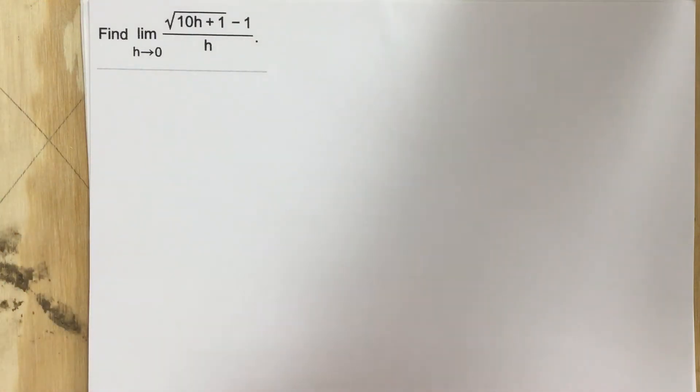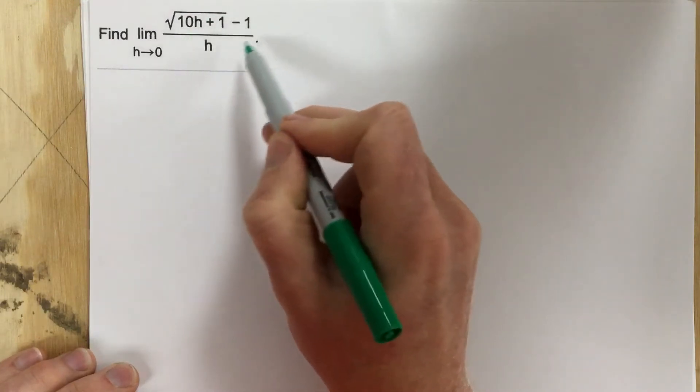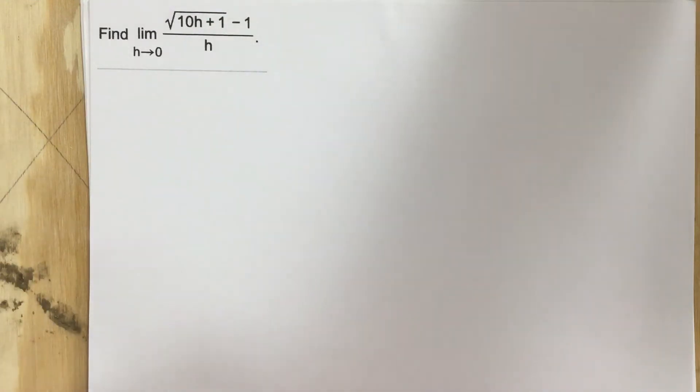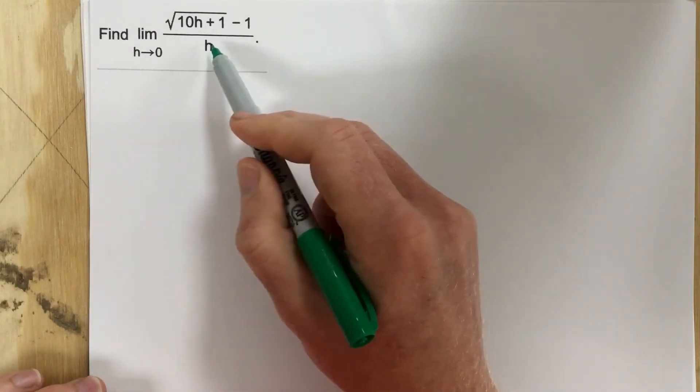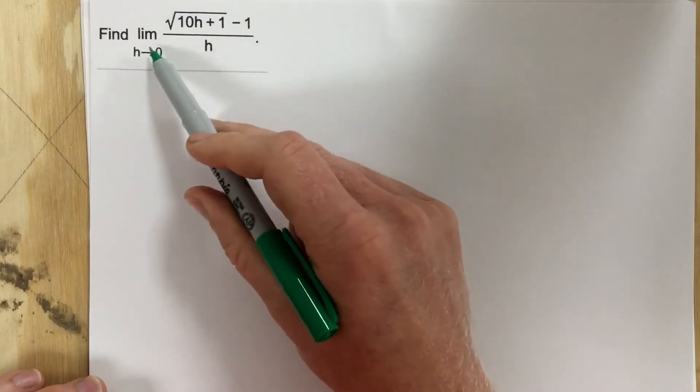What I need to do is I need to manipulate this expression so that we end up with a domain that includes 0.